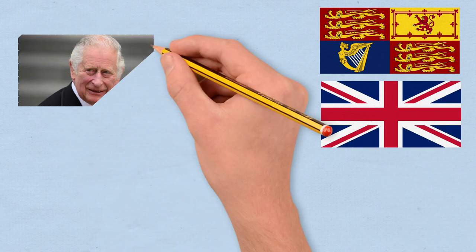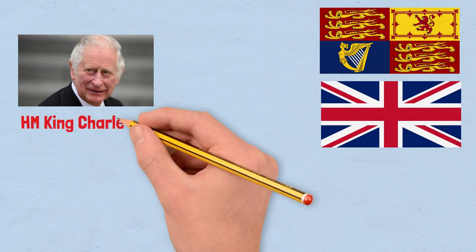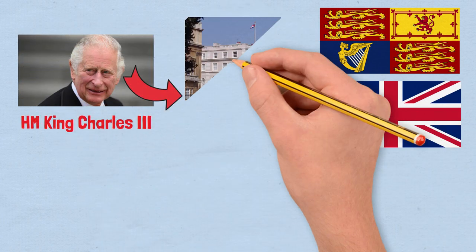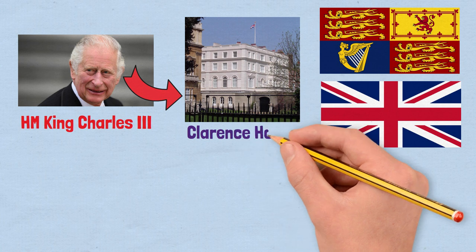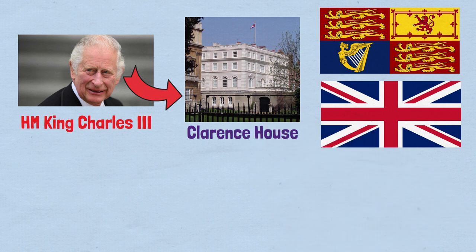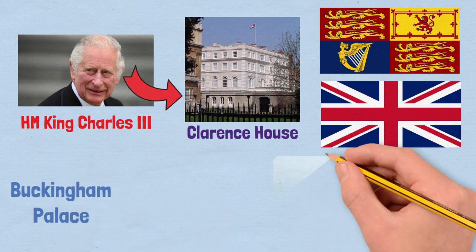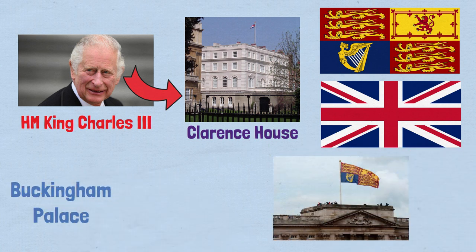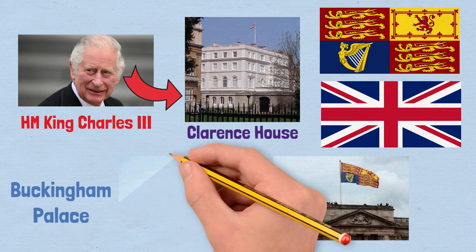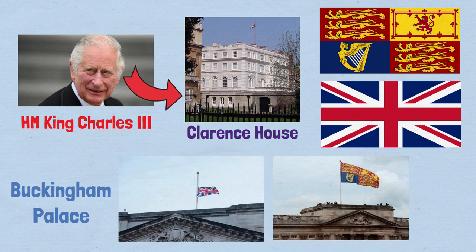The royal standard is pretty much used to inform whether a monarch is present in a particular building or not. When a royal residential building, or British Parliament for instance, displays a royal standard, it means that the sovereign is present within the building. Otherwise, the regular Union flag is shown.